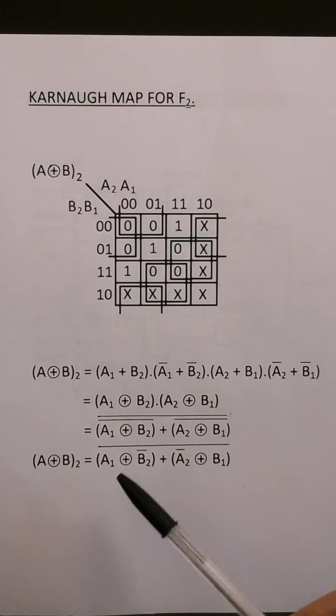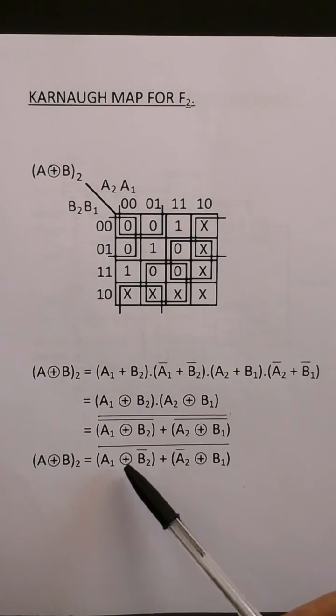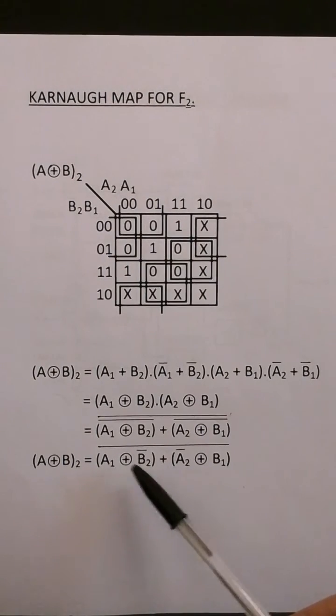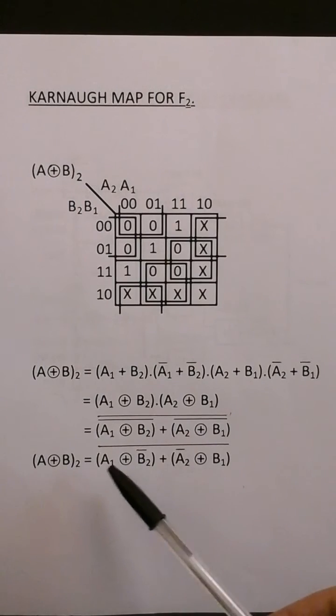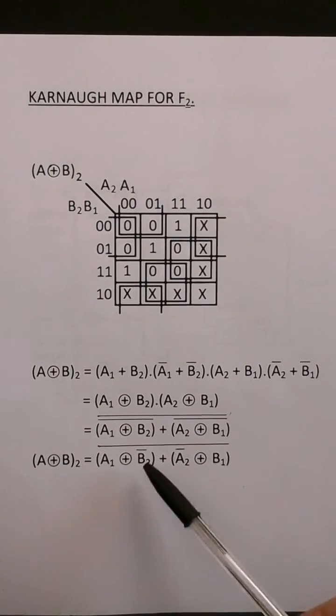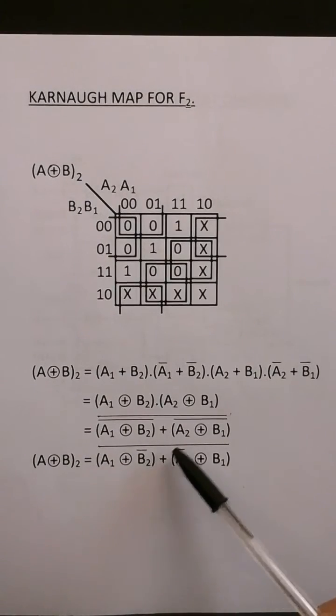So again, I've used two functions, an exclusive or and a nor. And I've used two inverters for A1 and B1 and one inverter for B2 and A2.